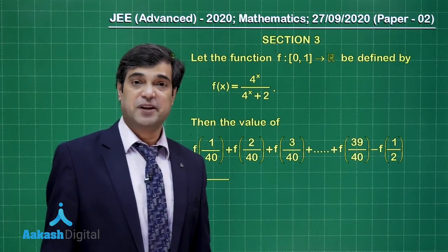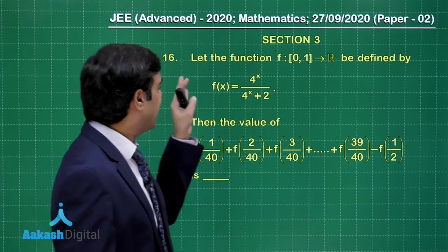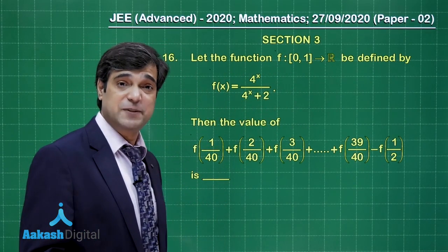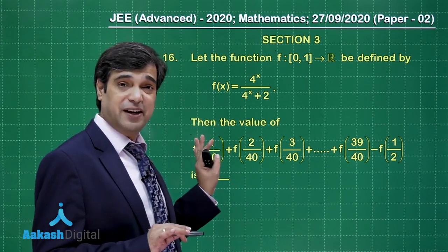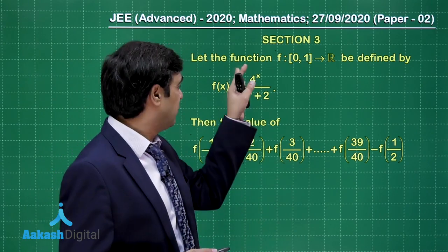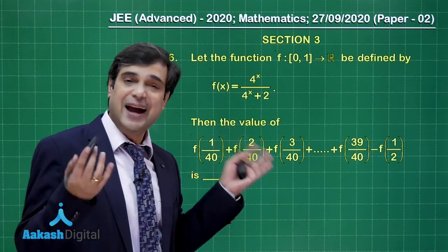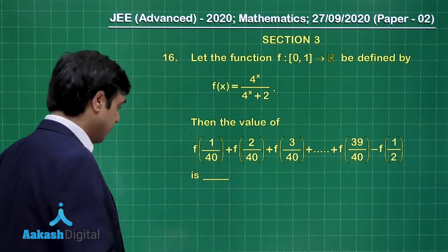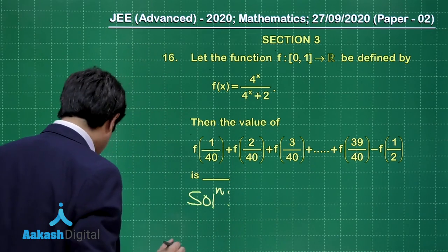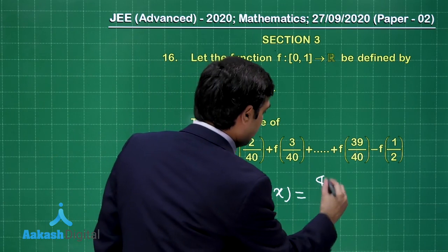Moving forward, let's take up question number 16. The function f is defined by f(x) = 4^x / (4^x + 2). This is a pretty common function. Instead of 4 you can put 9, for 2 you can put 3, for 4 you can put 'a', for 2 you can put root of 'a', and so on — n number of such functions we have already seen while preparing for JEE.